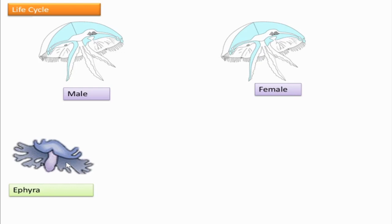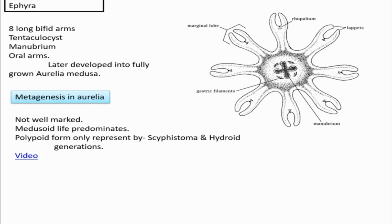Each ephyra is characterized by the possession of eight long bifid arms, with a notch between them, and tentaculocysts. From the center, the manubrium is present, and from the four corners of the mouth, oral arms extend. After some period, the ephyra develops into a fully grown Aurelia medusa.